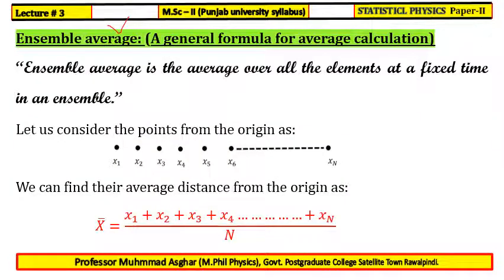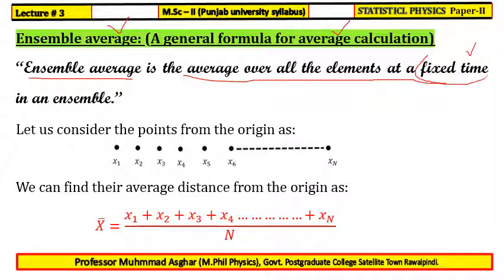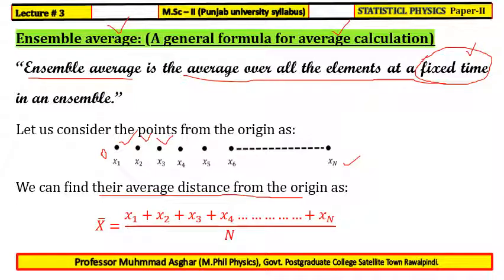Now we calculate the general formula for averages in statistical mechanics. The ensemble average is the average over all elements at the same instant in an ensemble. Consider points from an origin with coordinates x1, x2, up to xN. We can find their average distance from the origin by adding all values and dividing by the total number of points N.